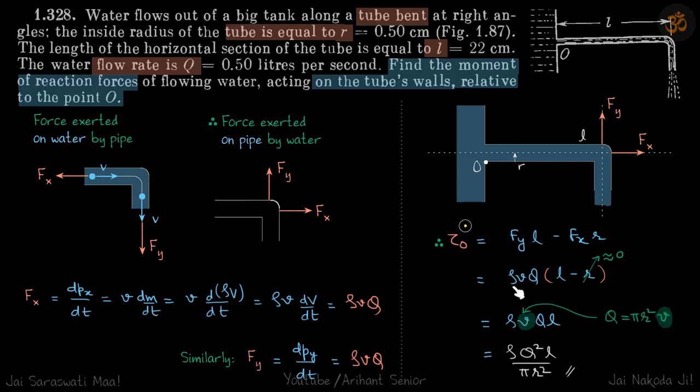So the magnitudes are same. This becomes rho VQ into L minus R. Now L is given as 22 centimeter and R is just 0.5 centimeter. So that's negligible compared to 22. So let's neglect that. And what we get is torque is rho VQ into L.